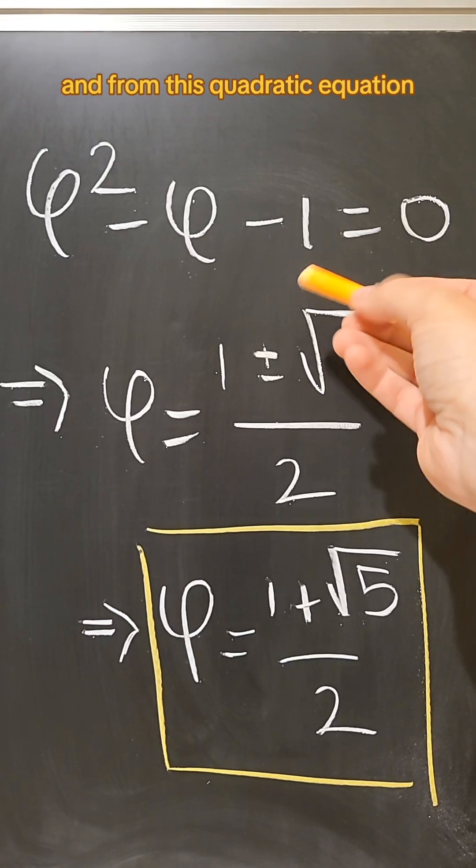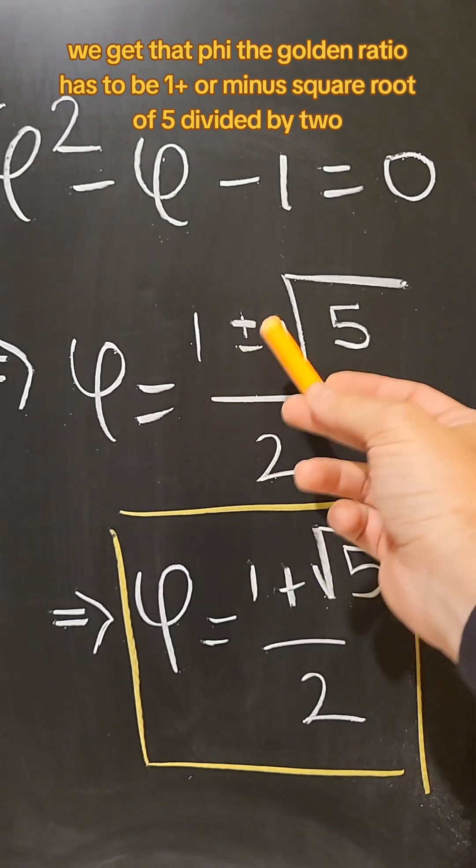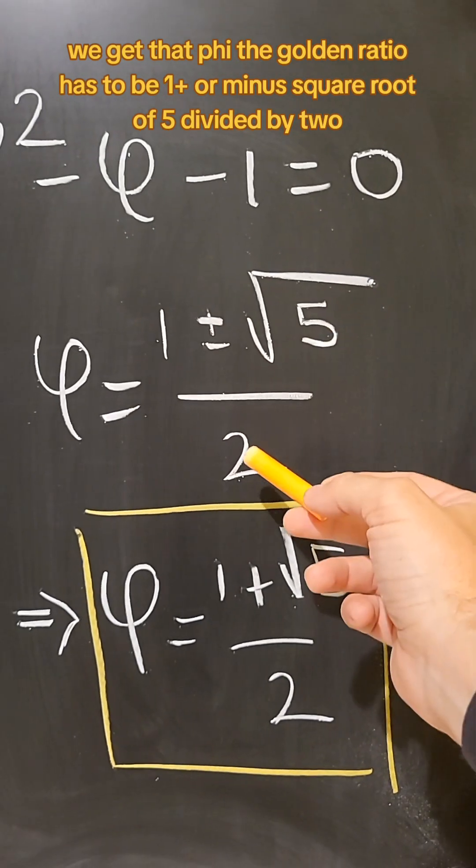And from this quadratic equation, if we use the quadratic formula, we get that phi, the golden ratio, has to be 1 plus or minus the square root of 5 divided by 2.